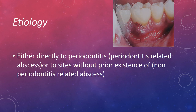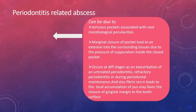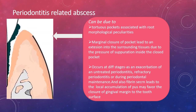The etiology can be due to periodontitis — periodontitis-related abscesses — or due to sites without prior existence of periodontitis, that is non-periodontitis-related abscesses. For periodontitis-related abscesses, one reason is tortuous pockets with root morphological peculiarities. If it is a complex pocket due to root morphological peculiarities, the opening will be very minimal, which can lead to abscess formation.